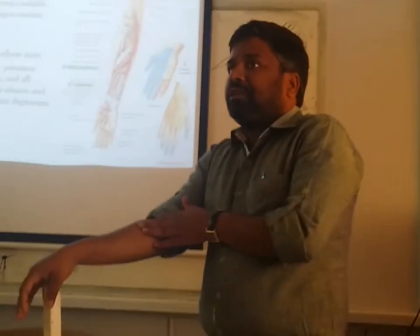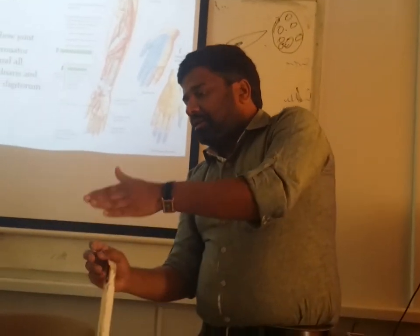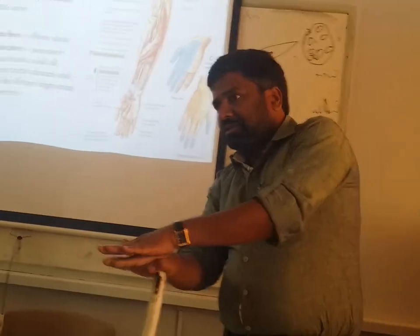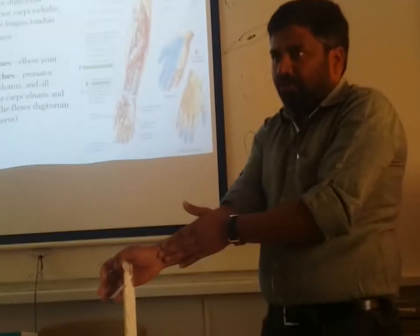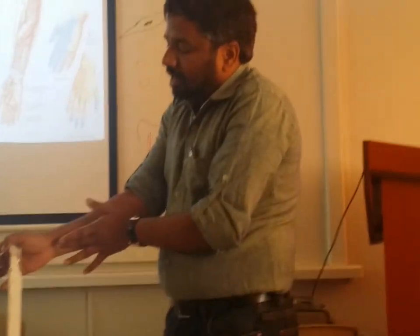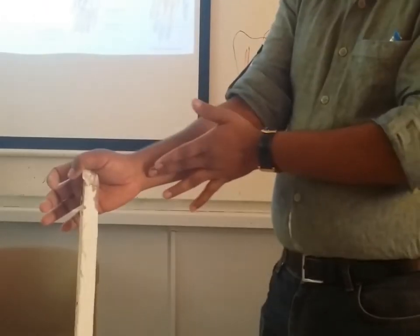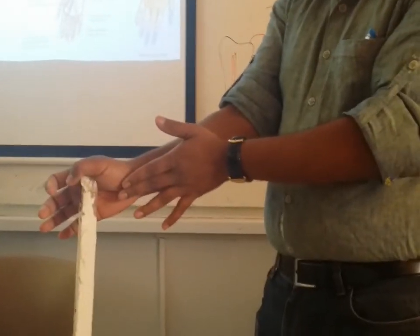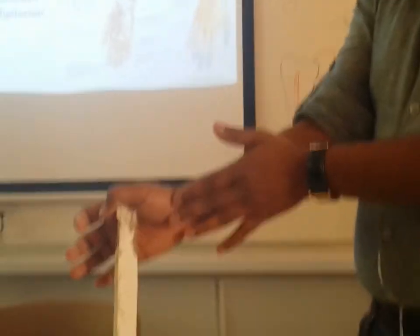After entering the forearm, the median nerve runs between flexor digitorum superficialis and profundus. It then comes out superficially at the lower part of the forearm and enters deep to the flexor retinaculum, running in the carpal tunnel. It then divides into a deeper branch supplying some hand muscles, and a superficial branch supplying the lateral three and a half fingers.